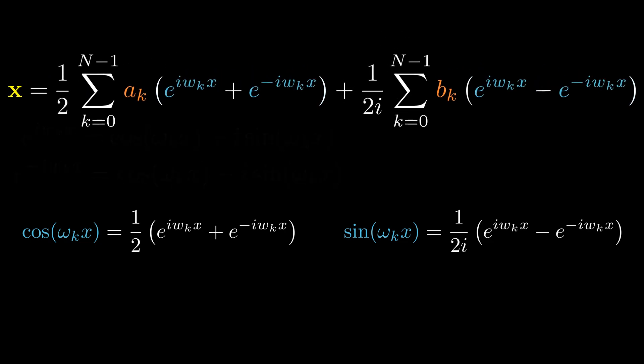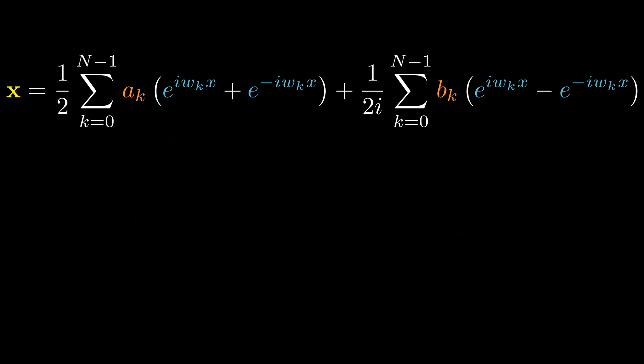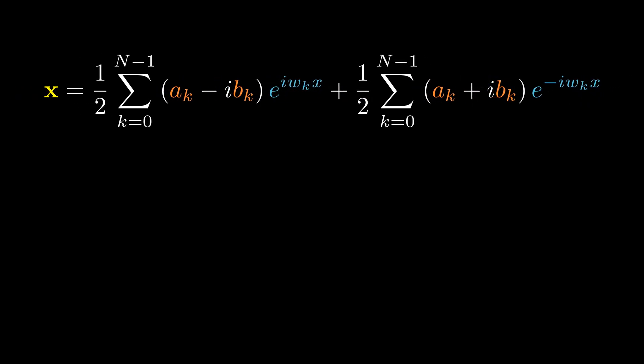By expressing cosine and sine functions as complex exponentials, we arrive at this equation. Now let's group the terms for e^(i omega k x) and e^(-i omega k x). The negative sign here is a bit annoying.